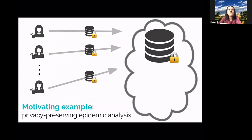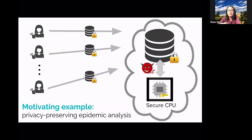We want to use data analytics to mitigate COVID-19: users upload their location traces and social interactions to a cloud provider, and everything is encrypted because the data is privacy-sensitive. One promising approach is Intel SGX or any secure processor. At a high level, a secure processor creates a hardware sandbox called an enclave; inside the enclave there's a secret key, data can be decrypted and computation performed, but any data leaving the enclave becomes encrypted again.